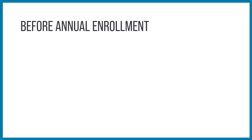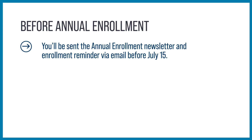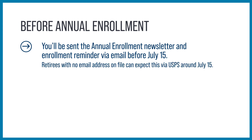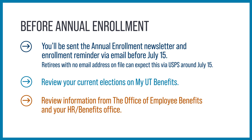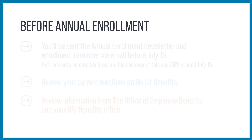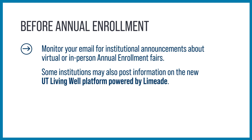As you prepare for annual enrollment, here are a few reminders. You will be sent the annual enrollment newsletter and an enrollment reminder via email before July 15th. If you do not have an email address on file, you can expect this via U.S. Postal Mail around July 15th. Review your current elections on My UT Benefits and information from the Office of Employee Benefits and your HR Benefits Office. Monitor your email for any institutional announcements about virtual or in-person annual enrollment fairs. Some institutions may also post this information on the UT Living Well platform powered by LimeAid.